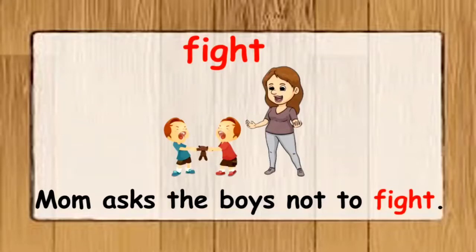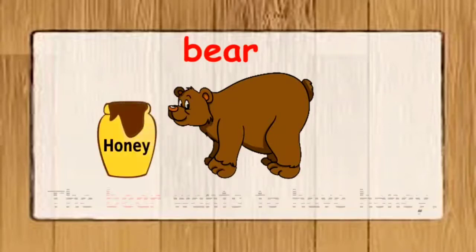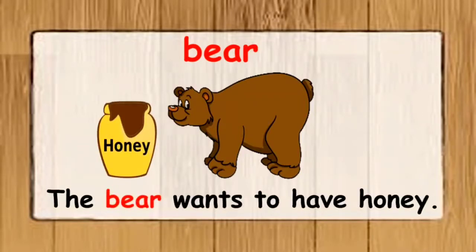The next word is bear. Bear is a wild animal, usually big in size. Their body is covered with hair and they have a very short tail. I have used the word bear in a sentence: the bear wants to have honey. You can see honey in front of the bear, and the bear wants to have it.